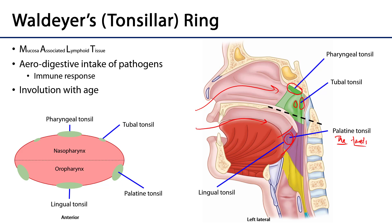Finally, on the root of the tongue we have the lingual tonsil. The lingual tonsil is quite large and comes into contact with any foodstuffs that pass over the dorsal surface of the tongue.